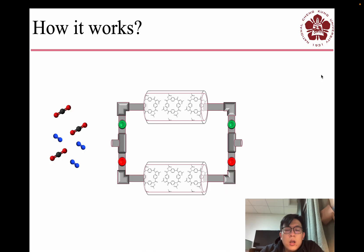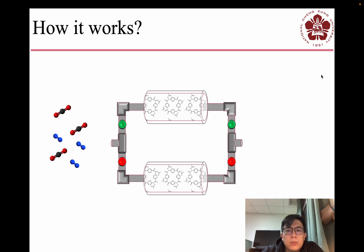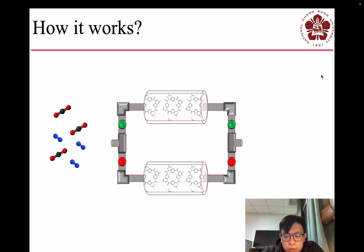So we want to combine these together — the adsorbent and the system. We pack our porous molecular crystals inside the pressure swing adsorption columns. Then we feed gas mixtures with different ratios, like carbon dioxide and nitrogen at 50-50%.